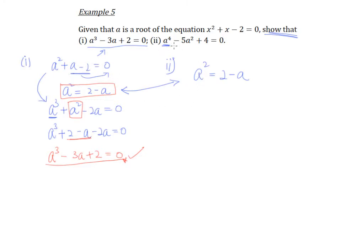So in order to get a to the power 4, it's not very difficult to understand that we need to square both sides, isn't it? So when we square both sides, we get a power 4, and we end up with 2 minus a bracket squared on the right. And it seems like we have no choice but to expand this, and we end up with 4 minus 4a plus a squared.